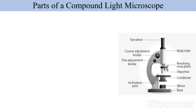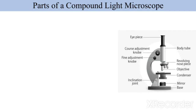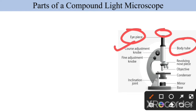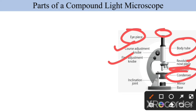Now let's understand the different parts of a compound microscope. At the top is the eyepiece, used to see the object. Below that is the body tube, which keeps the two sets of lenses at a set distance apart. There is the coarse adjustment knob and the fine adjustment knob — with these we can adjust and magnify the image. The rotating nosepiece allows changing between objective lenses such as 10x, 45x, and 100x. The condenser is used to condense the light, along with the mirror, base, and inclination joint.